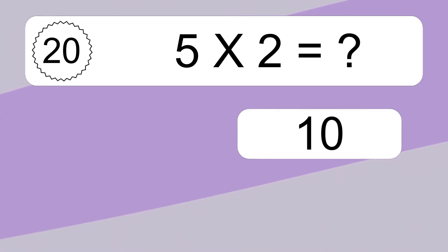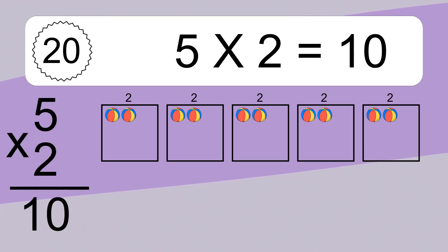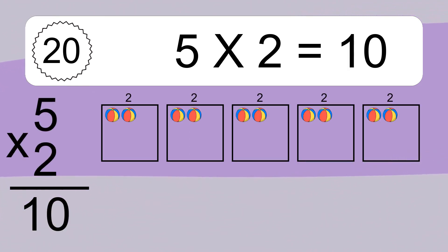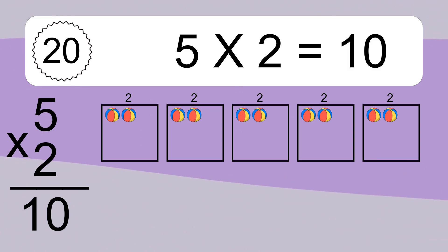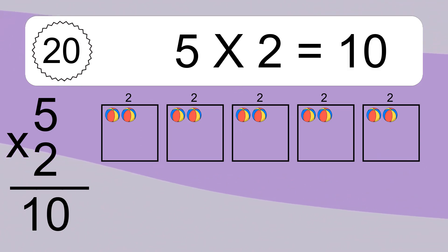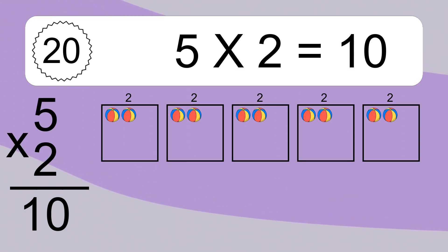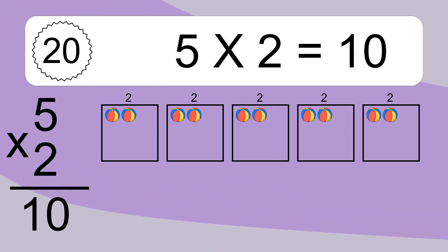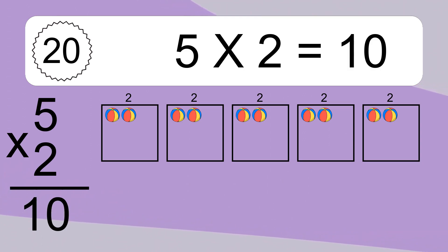5 times 2 equals what? 5 times 2 equals 10. We have 5 boxes, and each box has 2 colorful balls inside. If you count all the balls in all the boxes together, you will have 5 times 2 balls. This equals 10 balls.